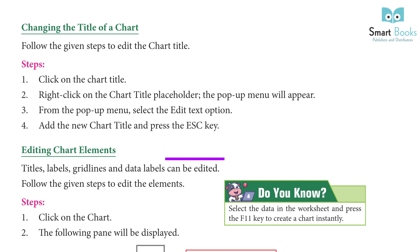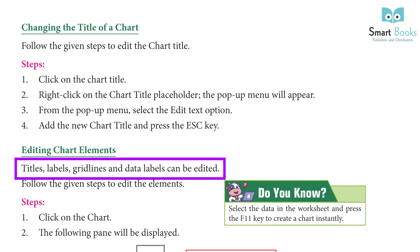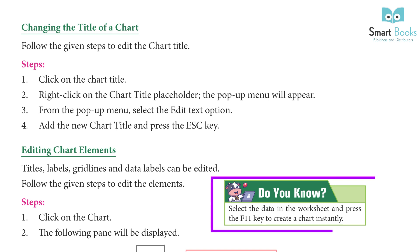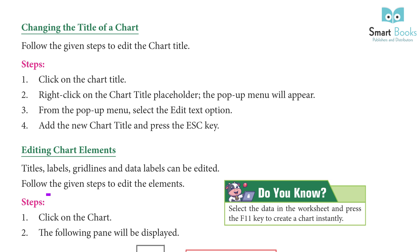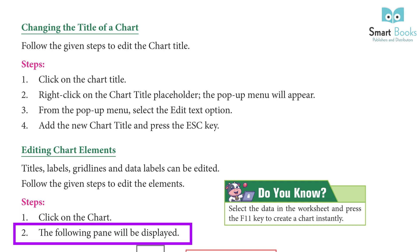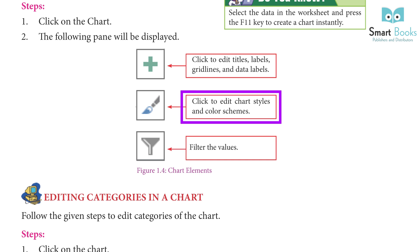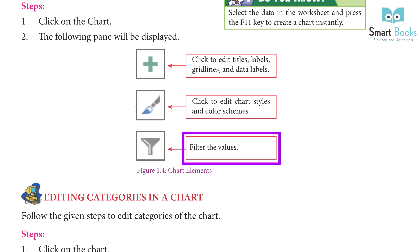Editing Chart Elements: titles, labels, grid lines, and data labels can be edited. Do you know? Select the data in the worksheet and press the F11 key to create a chart instantly. Steps: Step 1: Click on the chart — the following pane will be displayed. Step 2: Click to edit titles, labels, grid lines, and data labels. Step 3: Click to edit chart styles and color schemes. Step 4: Filter the values.